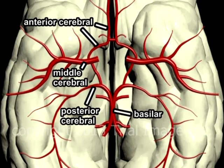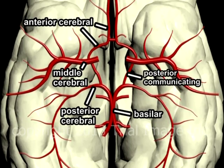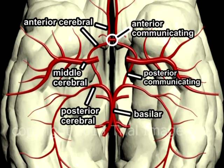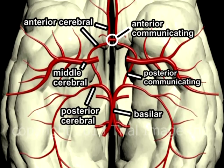The basilar, posterior communicating, and anterior communicating arteries complete the circle. By merging the inflow of blood to the brain from the carotid and vertebral arteries, the chance is minimized that an obstruction or impairment in flow in any one of these arteries will result in a significant impairment of blood supply to the outflowing arteries.